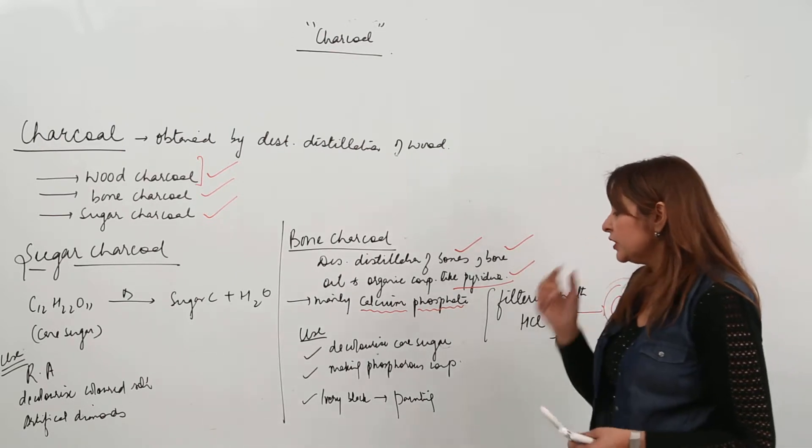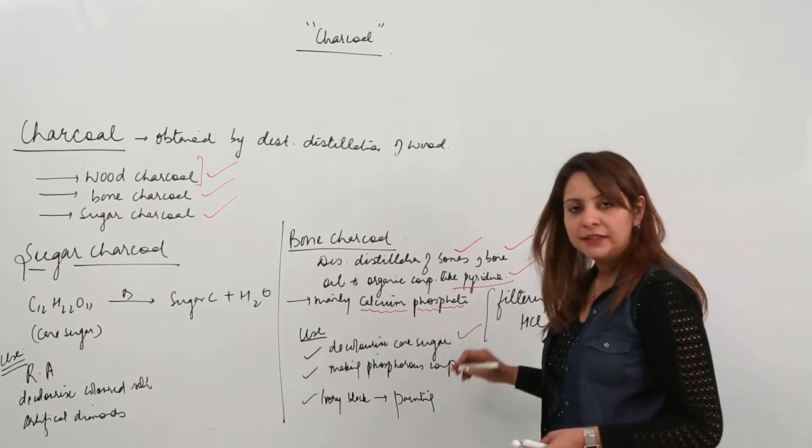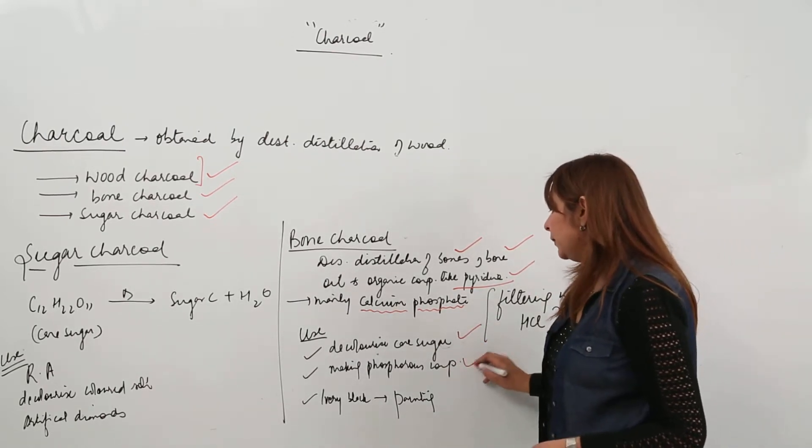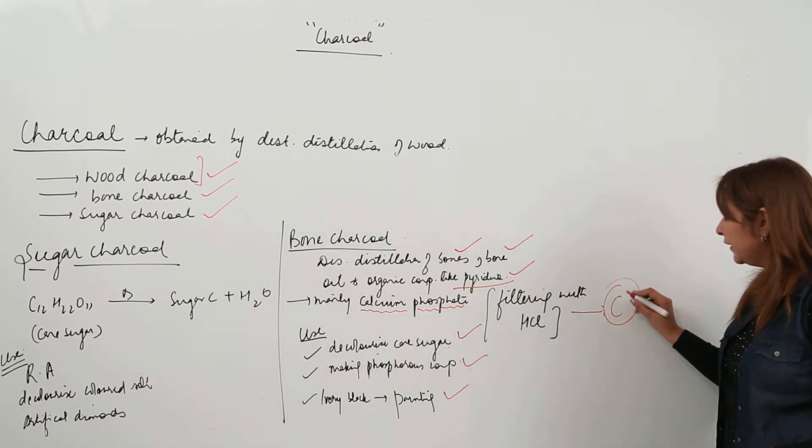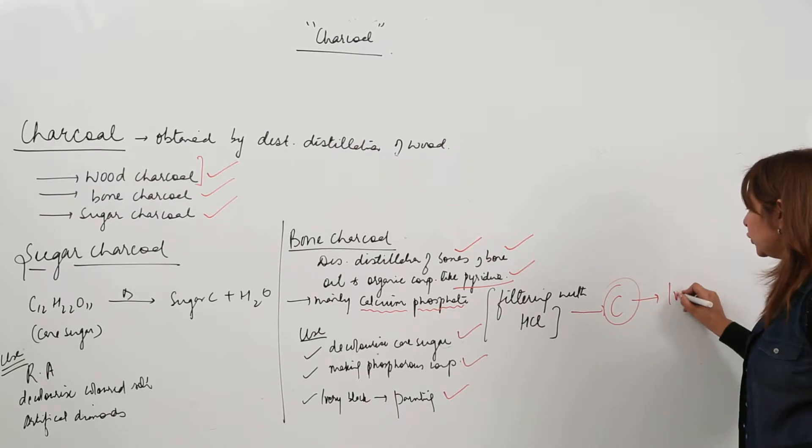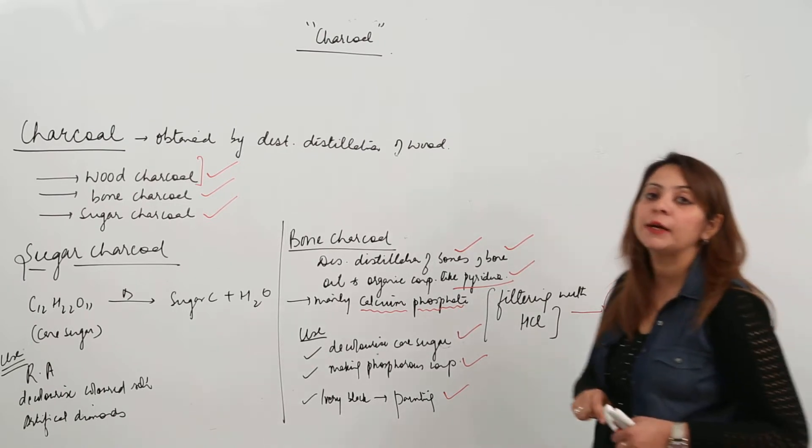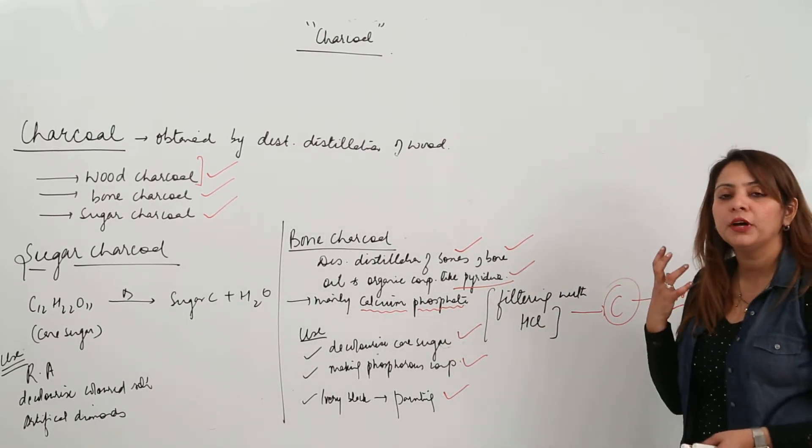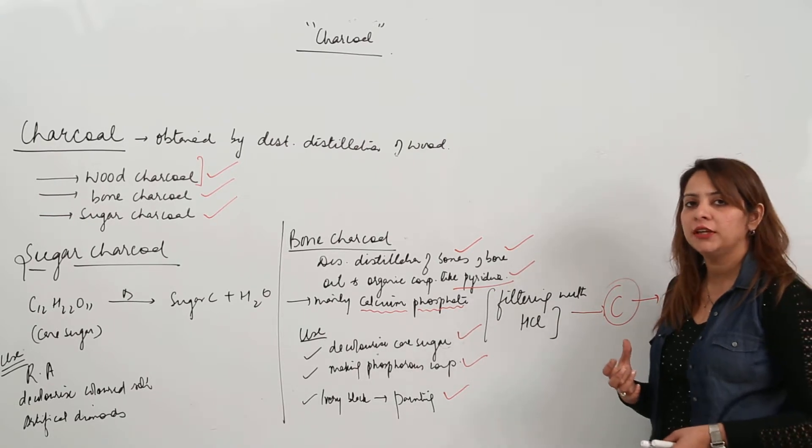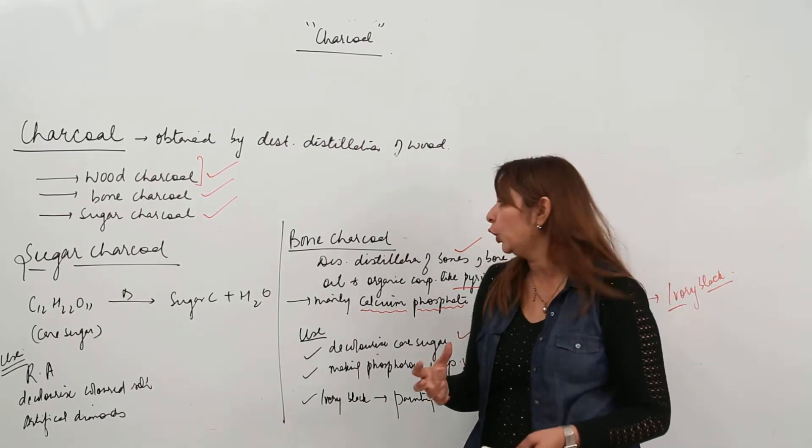And where is it used? Again used in decolorizing the cane sugar. It is used in making phosphorous compounds also. And the deep black carbon form which you get is also called ivory black. And it is being used for artistic painting because it is very deep black in color.